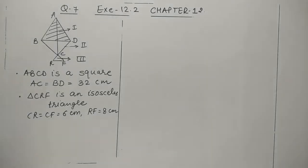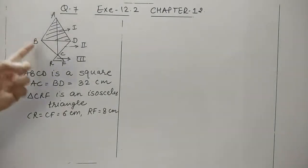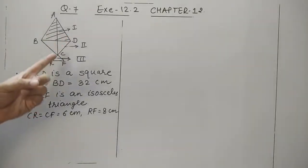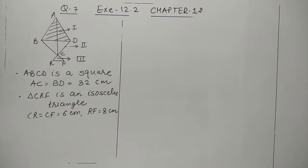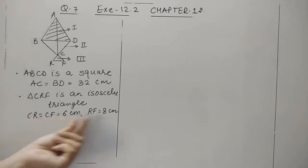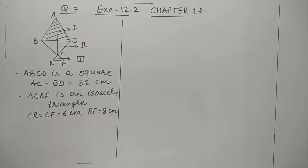Let's continue with question number seven. It is an important question. A kite is given which is in the shape of a square ABCD, and as a base an isosceles triangle. The diagonals AC and BD of the given square are 32, and the base triangle CRF has two equal sides of length 6 centimeter and a base of 8 centimeter.